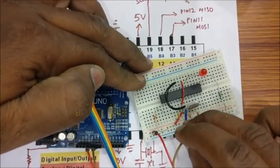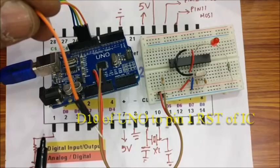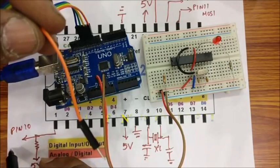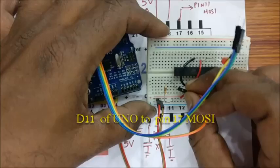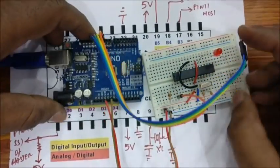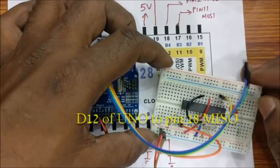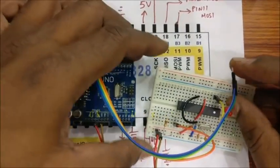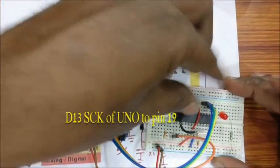5V of UNO is connected to reset pin of ATmega328 which is pin 1 on the breadboard. D12 of UNO is connected to pin 18 which is MISO of the IC. D13 of UNO is connected to pin 19. These are the SPI connections.